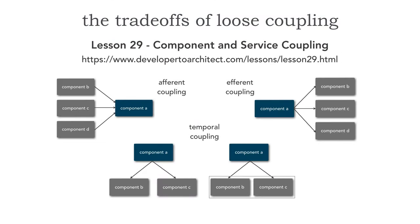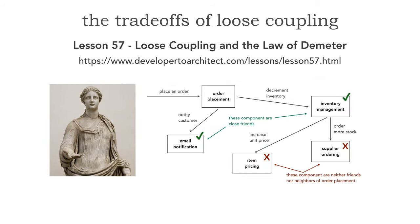I talked a lot about component and service coupling in lesson 29. If you haven't seen that lesson, I would highly recommend pausing this lesson and looking at that one first. Within that lesson, I talked about the types and levels of component and service level coupling — afferent or incoming, efferent or outgoing, and temporal, which are non-static timing dependencies. I then talked in lesson 57 about loose coupling and correspondingly the Law of Demeter. If you haven't seen that lesson either, I'd also highly encourage you to see that one first before this one.